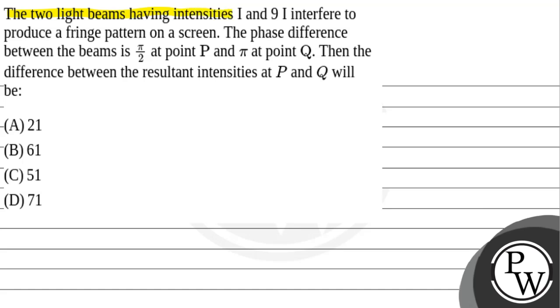The two light beams having intensities I and 9I interfere to produce a fringe pattern on a screen. The phase difference between the beams is π/2 at point P and π at point Q. Then the difference between the resultant intensities at P and Q will be—there are four options given to us.